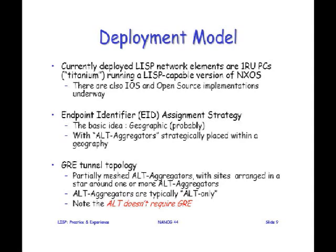We really wanted to keep EID prefixes aggregated, because if we don't, we'll just move the problems we have in the DFZ right now into the mapping system. We're trying to do this geographically along the lines of the RIRs. We have boxes called ALT aggregators trying to aggregate these things either continentally or regionally, placed strategically around. The ALT runs over a GRE tunnel topology that's partially meshed at the top. Note that the ALT doesn't require GRE specifically — you just need some tunneling technology to decouple the physical topology from the ALT topology.